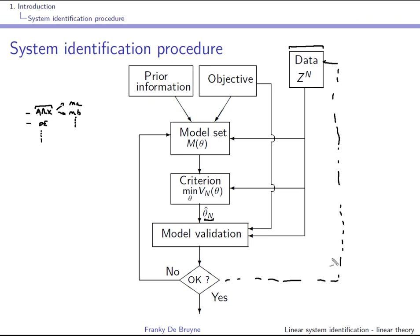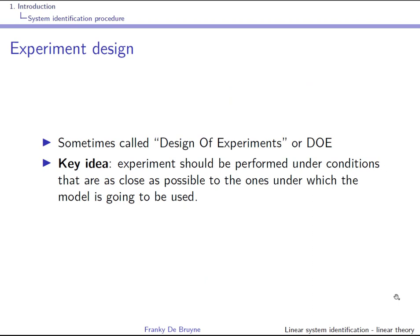Experiment design — sometimes called design of experiments or DOE — is a very important ingredient of the system identification procedure. One key idea is that the experiment should be performed under conditions as close as possible to the ones under which the model will be used.